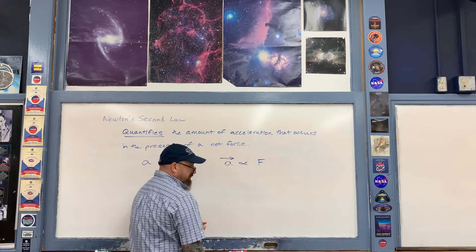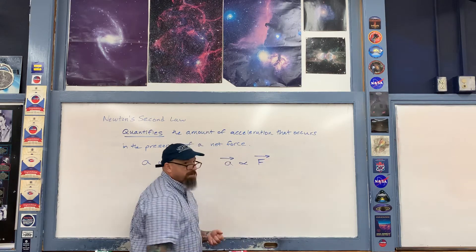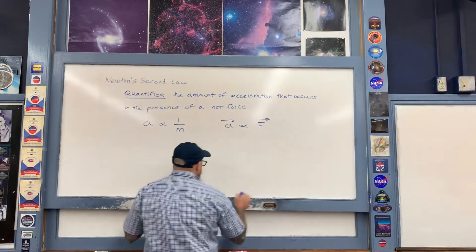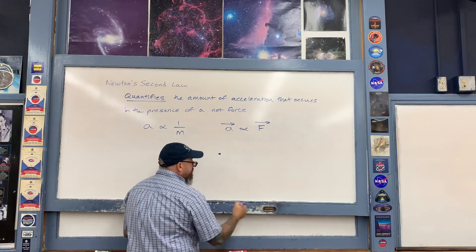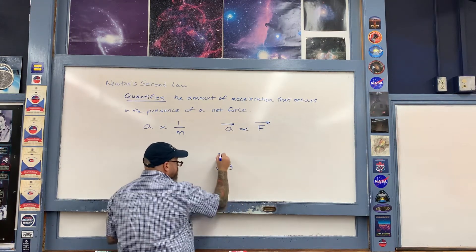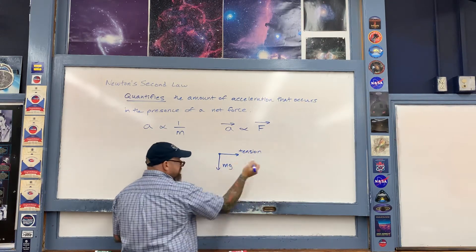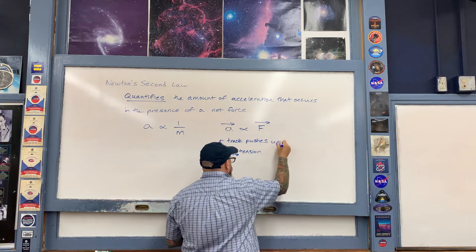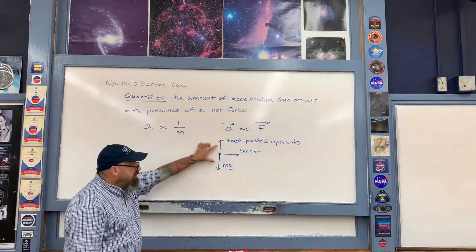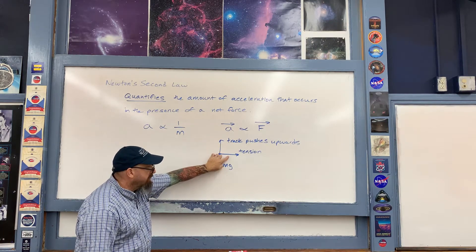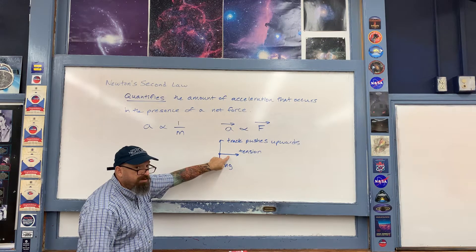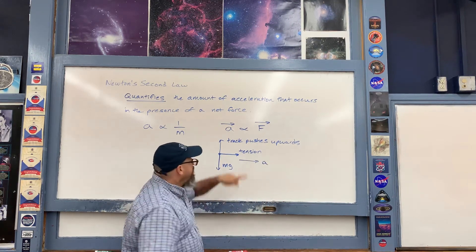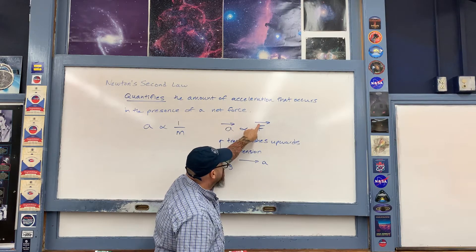Moreover, the direction of the acceleration vector is the same as the direction of the net force vector. You can understand that from the force diagram: when the air is on, there are three forces acting on the object — weight straight downward, tension to the right, and the track pushing upward. Vertically, the two forces cancel each other out as vectors, but horizontally, the tension force is not canceled out by friction. Therefore, the direction of the net force is to the right, which is the same as the direction of the acceleration.